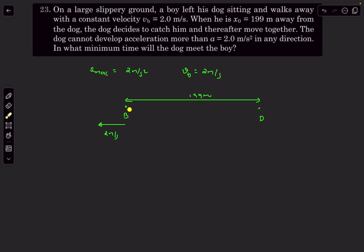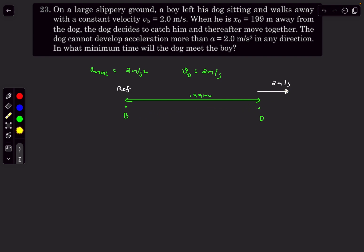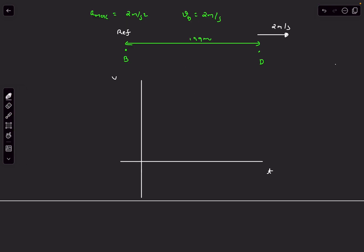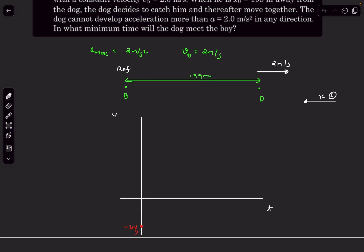The key idea: since the boy moves at constant speed, let's take the boy as our reference frame. In this frame, we reverse the boy's velocity and give it to the dog as an initial condition — so the dog starts with an initial velocity of 2 m/s away from the boy and must cover 199 meters to reach him. We draw a v-t curve, taking leftward (toward the boy) as positive. The dog starts at v=−2 m/s, accelerates with full potential, then decelerates with maximum deceleration, so that it arrives at rest exactly when it reaches the boy.